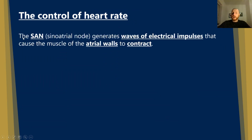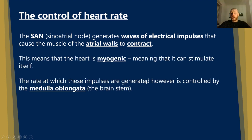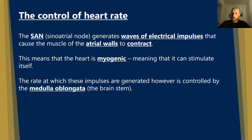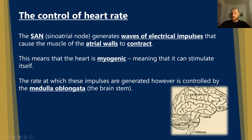The sinoatrial node generates waves of electrical impulses that cause the muscle of the atrial walls to contract — this is why we call the heart myogenic, meaning it stimulates itself. However, the rate at which these impulses are generated is controlled by the medulla oblongata, which is the brainstem. Receptors detect changes in things like pH or oxygen, send impulses to the medulla, and the medulla then influences the rate at which the sinoatrial node sends impulses. But it is still myogenic — still controlled by the heart directly.